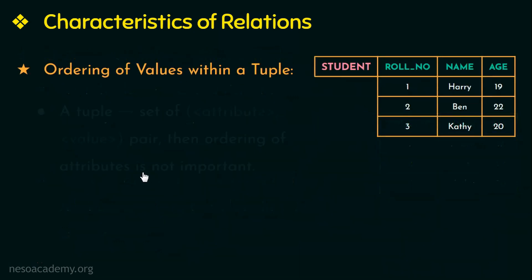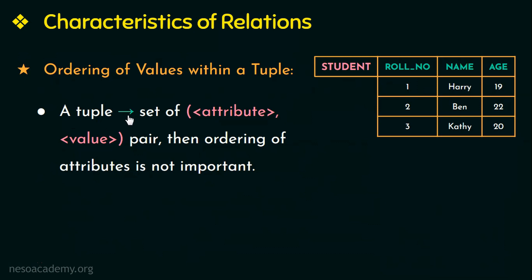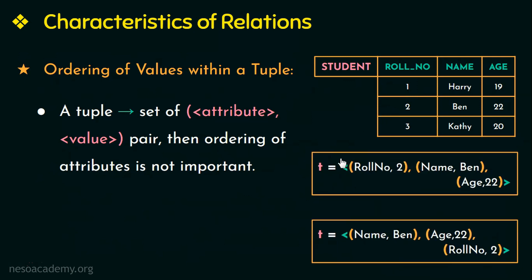As per this alternative definition, a tuple is defined as a set of attribute-value pairs. So when we write a tuple in this form, ordering of attributes is not important. For example, if I take the second tuple from this relation and write it in the form of attribute-value pairs, then ordering is not necessary because the attribute name and its corresponding value are mentioned together.